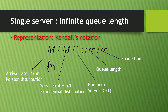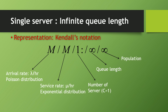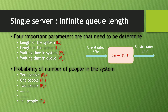The first M represents the arrival rate, that is lambda per hour, which follows the Poisson distribution. The second M represents the service rate, mu per hour — this is exponential distribution. Lambda is the number of people arriving into the system per hour, and mu is the number of people being serviced per hour. The 1 represents the number of servers, so the value of c is 1.